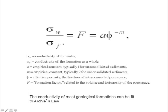Conversely, if we know the resistivity of the water, we can back out the formation factor. This is done a lot in electrical well log analysis, where the resistivity of the water would be the mud filtrate resistivity, and the resistivity tool measures the bulk resistivity of the formation. Actually these are conductivities: the conductivity of the water divided by the conductivity of the formation gives you the formation factor.